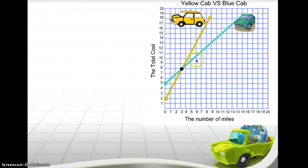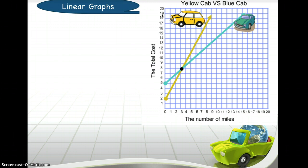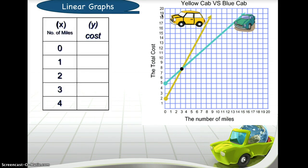What we have here is Yellow Taxi — the payment you give to a yellow cab versus a blue cab. On the x-axis you'll find the number of miles, and on the y-axis you'll find the total cost in dollars — how much you pay.